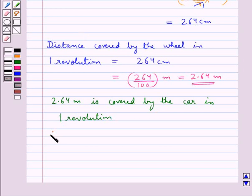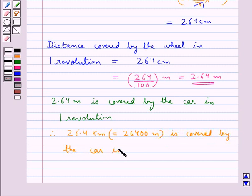Therefore, 26.4 km, which is equal to 26,400 m, is covered by the car in one upon 2.64 times 26,400 revolutions.